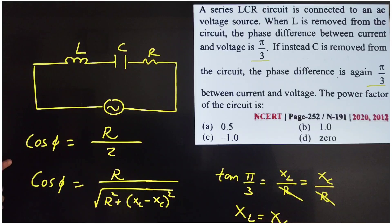You all know power factor is nothing but cos φ is equal to R by Z. And you know Z is nothing but impedance, which is R square plus XL minus XC whole square.